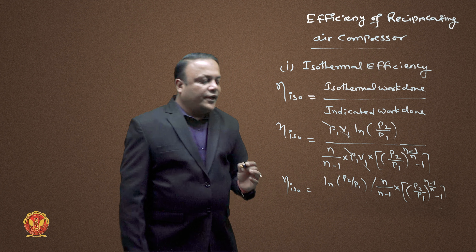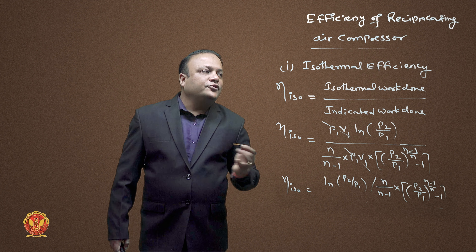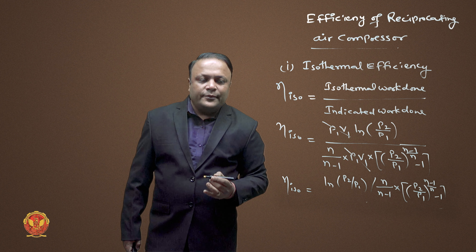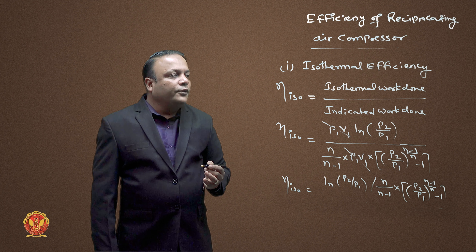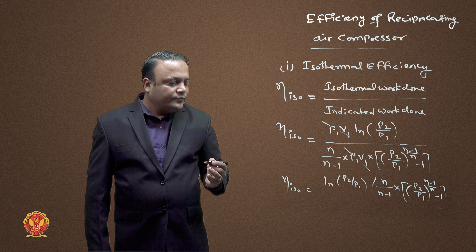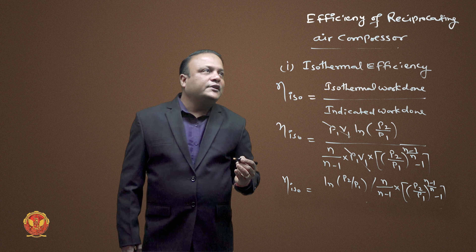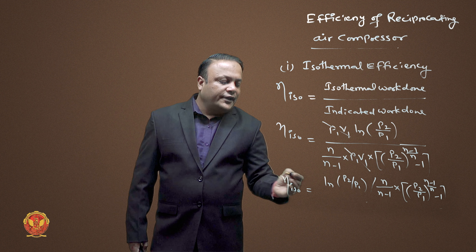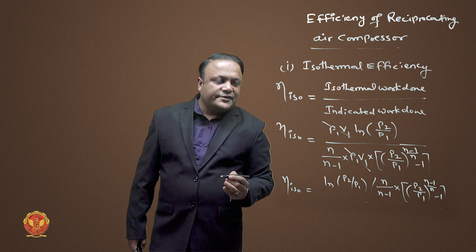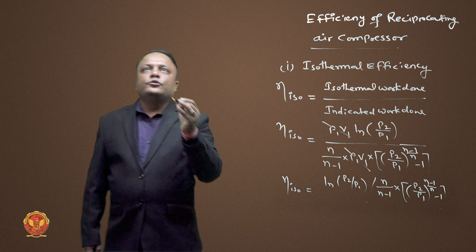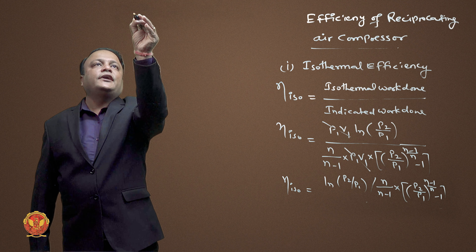This is the isothermal efficiency. In this, perfect cooling occurs because the piston moves at a very slow speed, which is why it is known as isothermal efficiency. The second efficiency is mechanical efficiency.